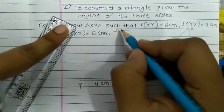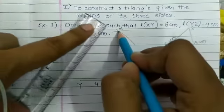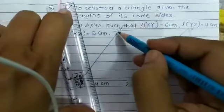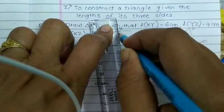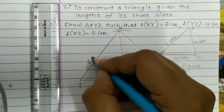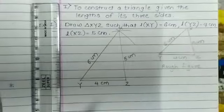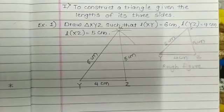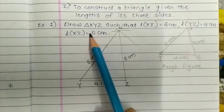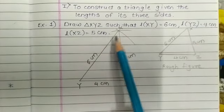The intersection point is point X. This is our point X. Now join point X and Y, and point X and Z. XY is 6 cm and XZ is 5 cm.